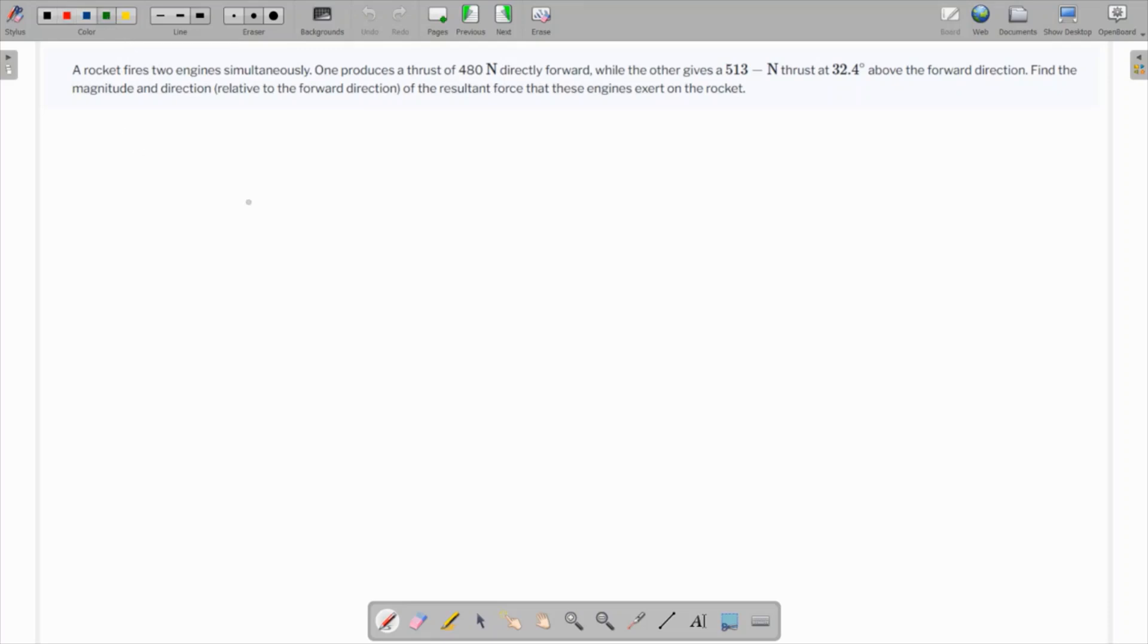This question is based on vectors. A rocket fires two engines simultaneously. One produces a thrust of 480 newtons directly forward, so let's call it over here. Another one gives 513.